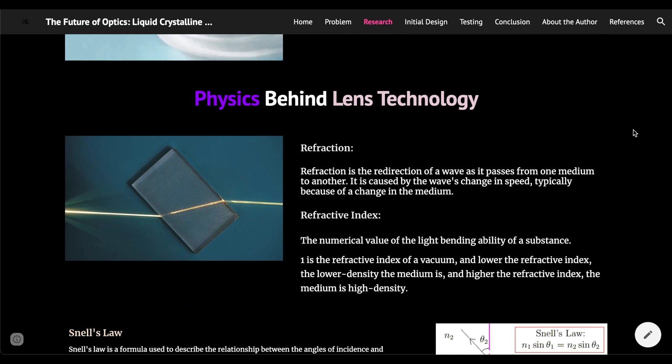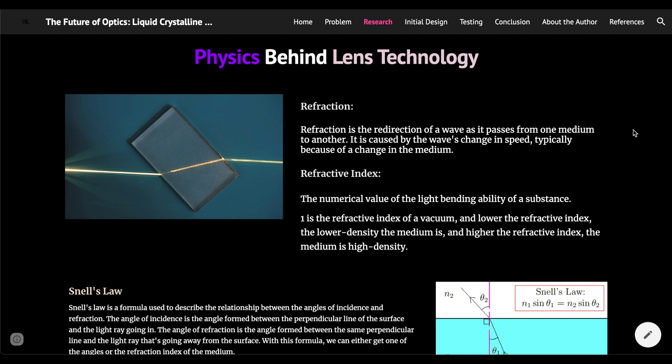The next section is about the physics behind lens technologies or optics. Refraction is basically that the speed of light changes when it passes through different substances. For example, in the photo on the left, the light is bent because the speed of light is slowed down when it is going through the trunk of plastic. And refractive index is the numerical value of the light bending ability of a substance. One is the refractive index of a vacuum where there is nothing. And the lower the refractive index, the lower density the medium is. And the higher the refractive index, the medium is higher density.